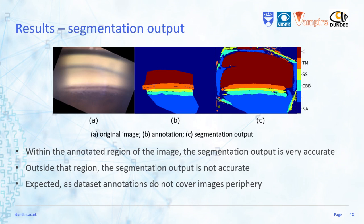A segmentation example of an image from the test set is proposed. The quality of the segmentation is very good within the annotated region of the image, while it is reasonable to assume that it is not outside this region. This is an expected behavior — the network is not trained to handle the periphery of the images, since even expert ophthalmologists cannot label this region with confidence. A better visualization of results is necessary and is part of our future work.